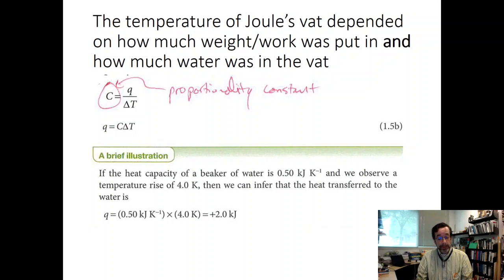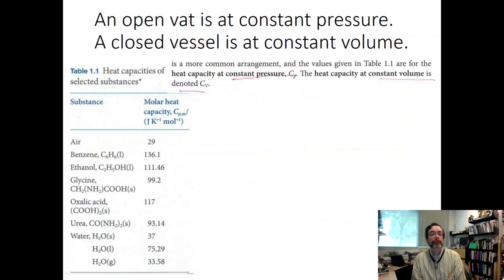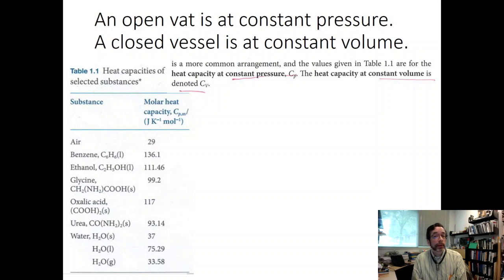No matter how complex the system, you can measure its heat capacity: just track how much heat goes in and how much the temperature rises. Looking at a table of substances, water has a surprisingly high heat capacity for such a small molecule — higher than air, and much higher in liquid form than in solid or gas form. For chapter one, once you know the heat capacity of a system, you can convert joules to degrees or degrees to joules.